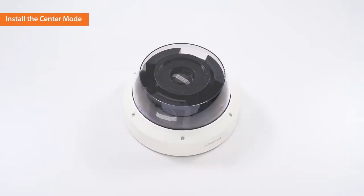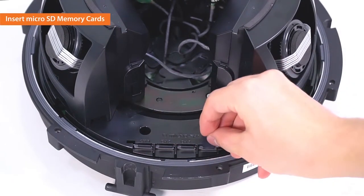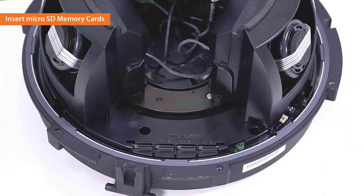Dome cover is used to neatly cover the cameras for both center and quad mode. The multi-directional camera uses four micro SD cards, one for each camera.